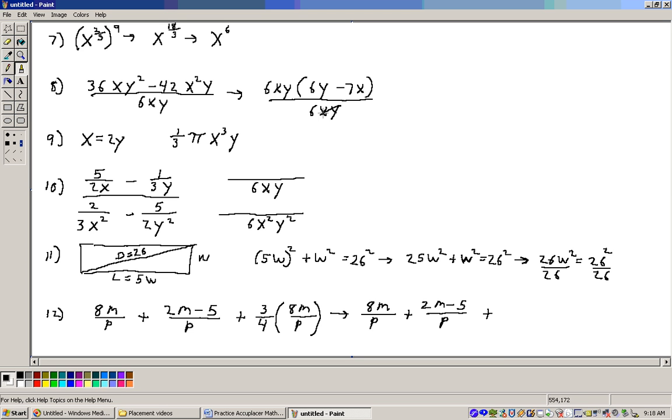On the bottom, we have a 6xy, so these cross off, and so that's our answer right there is just 6y minus 7x.